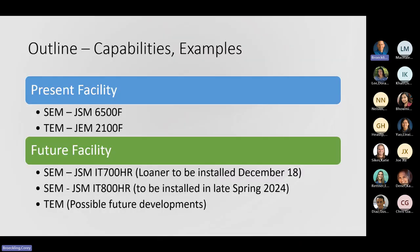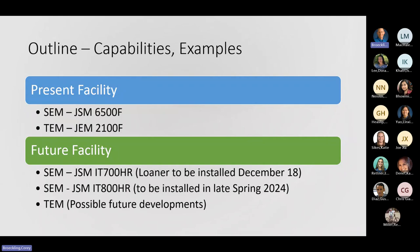What I'm going to talk about today is a little bit about what we have in the present facility, which is the SEM JUL6500F and the TEM, the JEM2100F. And then starting in about a week and a half, we get a loaner microscope, which is the SEM 700HR that's going to be installed starting December 18th.